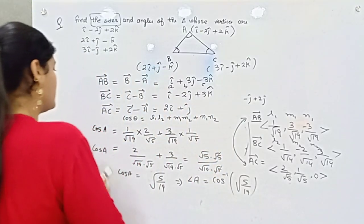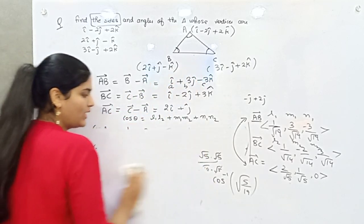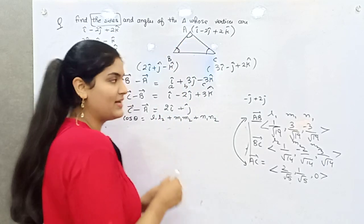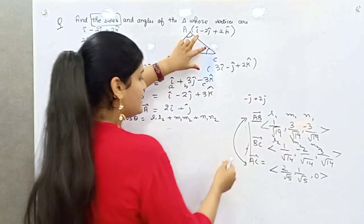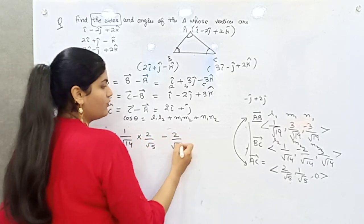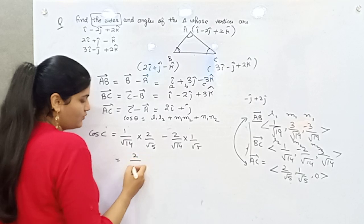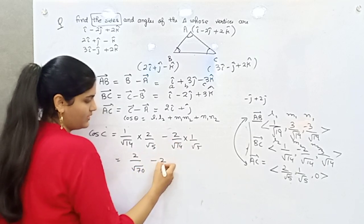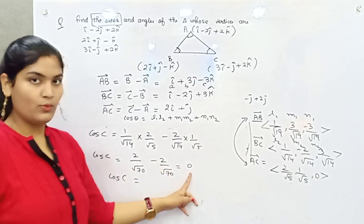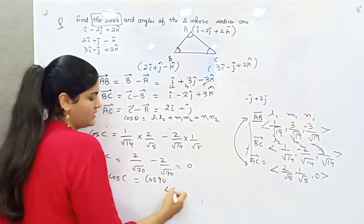For angle C, which sides do you take? AC and BC. Multiplying their direction cosines: (2/√5)(1/√14) + (1/√5)(−2/√14) + 0 = 2/√70 − 2/√70 = 0. Since cos C = 0, angle C = 90°.